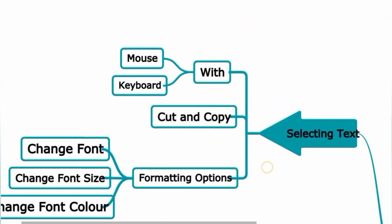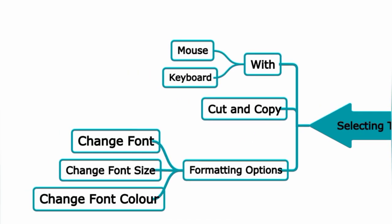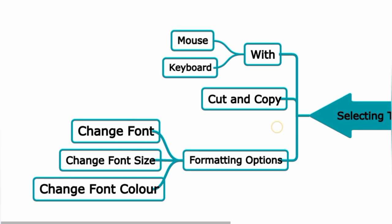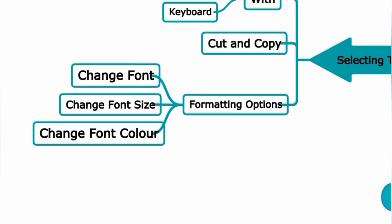Selecting text: you can select text using the mouse or keyboard. Use Ctrl+C to copy. Formatting options include font size, font color. This is regarding selecting text and formatting options.